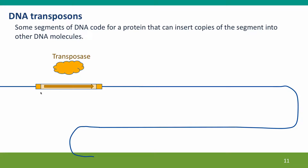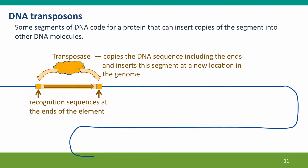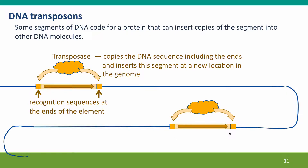DNA is directly synthesized and then inserted into its new location. These elements have an open reading frame — a gene — consisting of a gene and recognition sequences at the ends. The gene encodes a protein called a transposase, and the transposase recognizes the sequences at the ends of the element and takes them as a signal to make another copy of the DNA sequence, including the ends, and insert this segment into a new location in the chromosome. The old copy stays where it was, but a new copy is inserted at a different place — so now there are two copies of this element, both encoding the transposase that can copy it and make more.